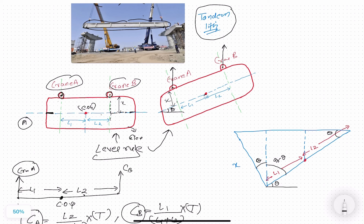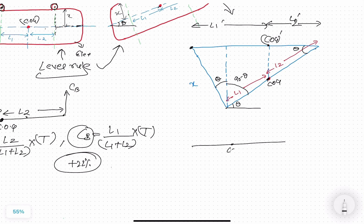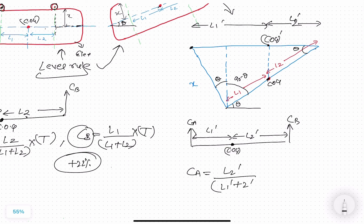We have to convert this case into a simple problem. Translating the axes: this is L1, this is COG, this is L2. Now modifying into the lever rule, COG becomes COG dash. This distance is L2 dash and this distance is L1 dash. The load on crane A, CA, equals the opposite side L2 dash divided by (L1 dash + L2 dash), multiplied by total load. CB equals L1 dash divided by (L1 dash + L2 dash), multiplied by total load.